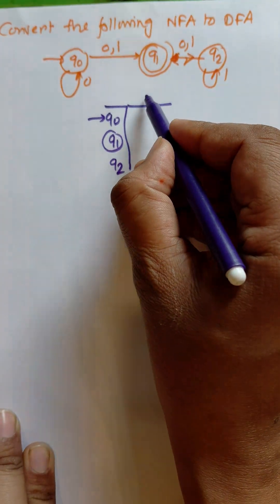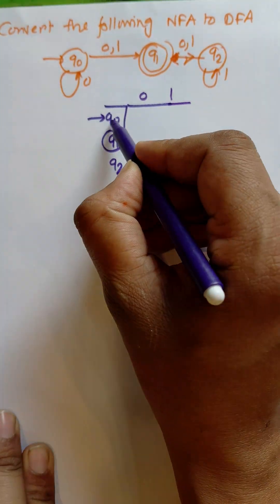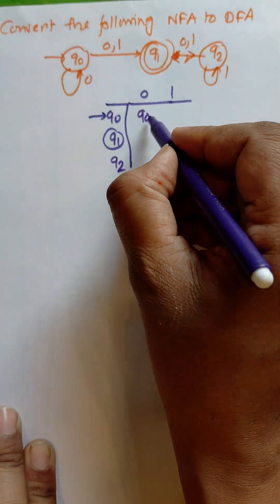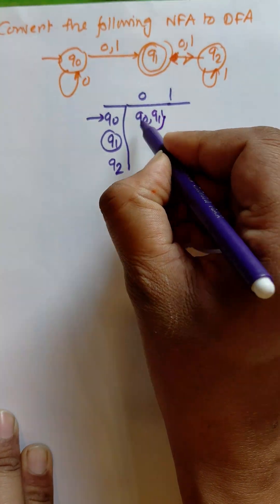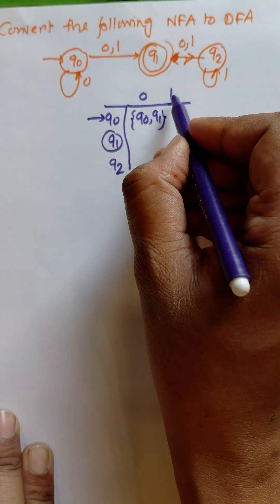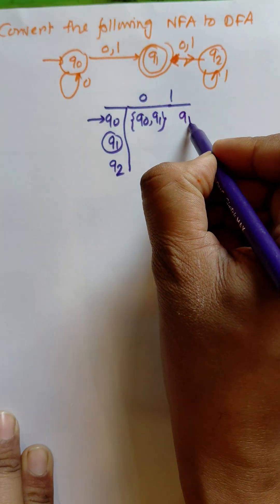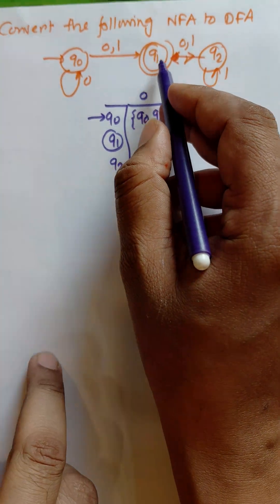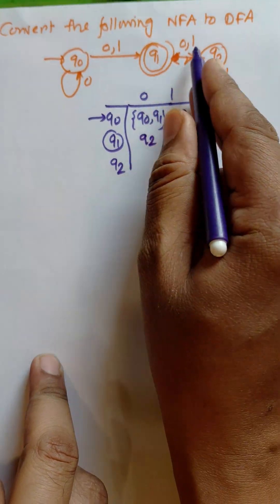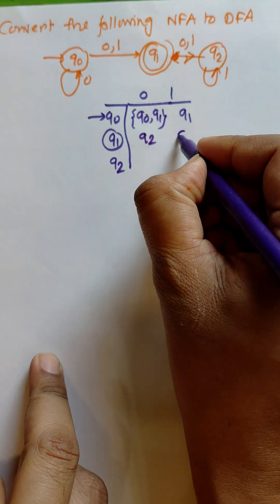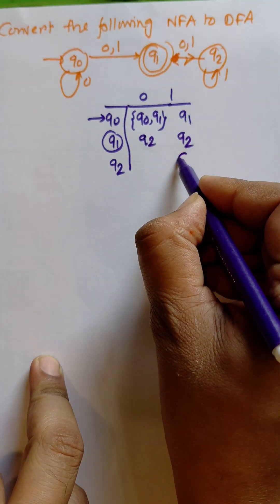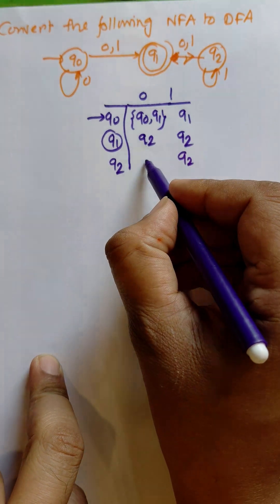There are two inputs, 0 and 1. When we apply 0, q0 goes to q0 and q1. Here the output is more than one state, that's why it is an NFA. q0 to 1 is q1. Now q1 to 0 is q2, q1 to 1 is q2, q2 to 1 is q2, and q2 to 0 is empty.